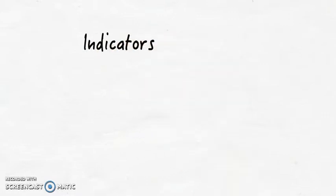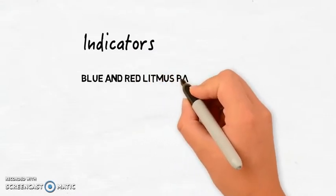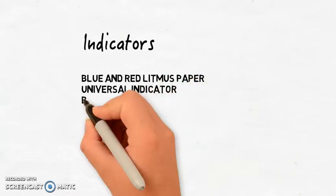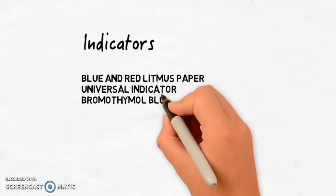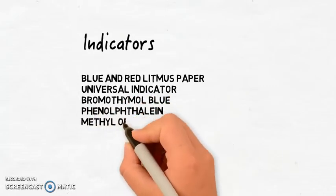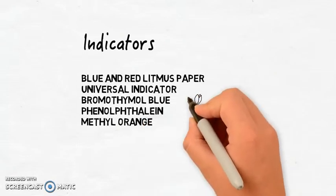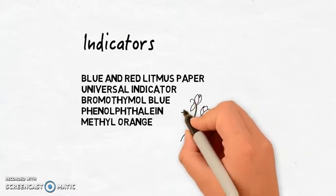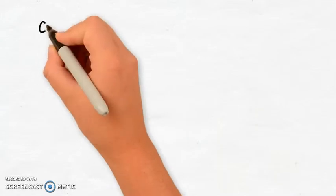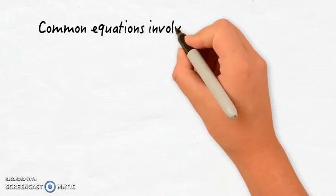Indicators can be used to identify substances as being acidic or basic. Examples of indicators include blue and red litmus paper, universal indicator, bromothymol blue, phenolphthalein, and methyl orange. These indicators can be produced from natural sources such as flowers or red cabbage. It's important to know that indicators don't give a specific measure of pH, although universal indicator does give an approximate range. They're just for identifying whether a substance is basic or acidic.